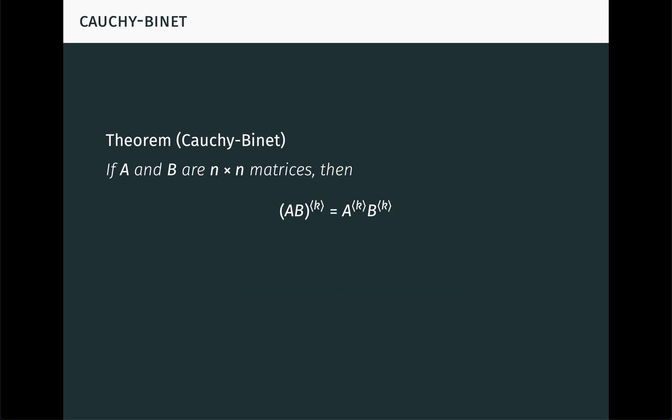As another example, the Cauchy-Binet theorem has a strikingly beautiful expression in terms of compound powers. Recall this theorem tells us how to compute the minors of a product of two matrices in terms of the minors of those matrices. In the language of compound powers, the theorem just says that the kth compound power of a product is the product of the kth compound powers of the factors. Although we've stated this for two factors, it extends to any finite number of factors.